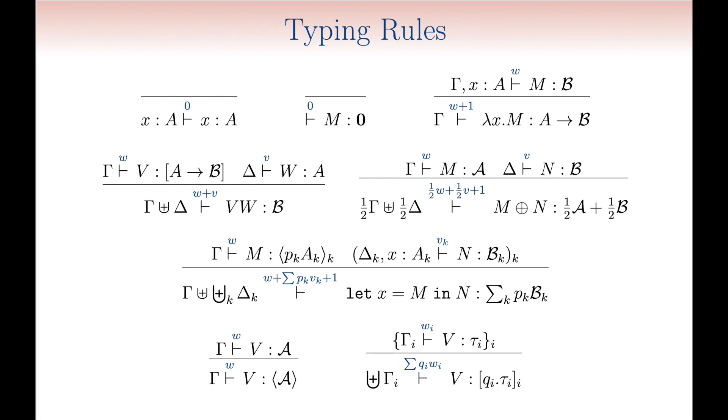Positive rational numbers, called weights, can be attributed to type derivations following their structure. As you probably remember, the characterization of expected evaluation times is precisely based on that.